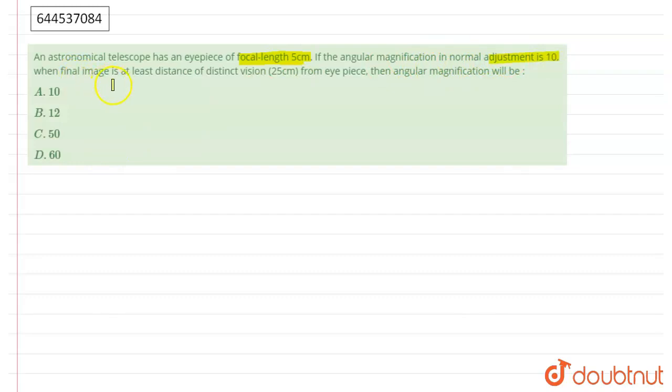When the final image is at least distance of distinct vision, meaning at capital D from the eyepiece, then the angular magnification will be?